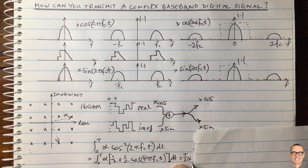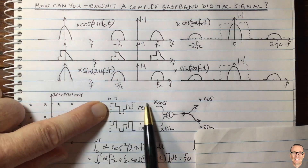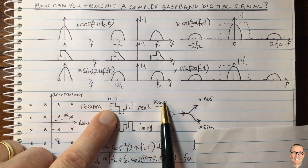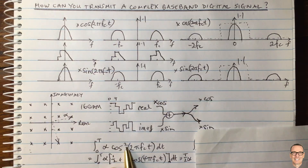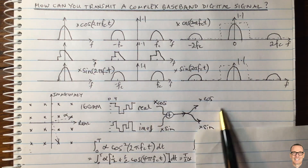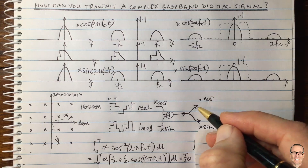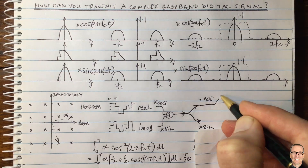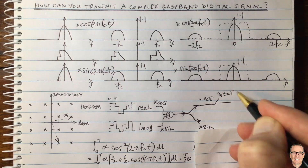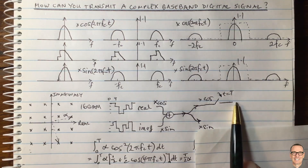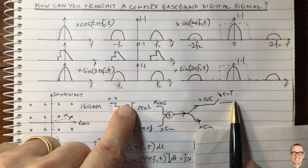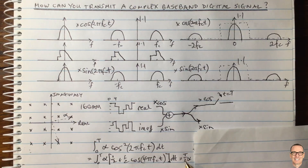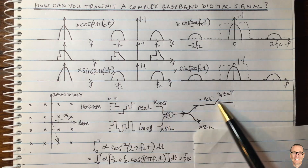The integral over a cosine waveform where there's an integer number of cycles in that range is zero. So all you're left with is the ½ times α, meaning the result equals T/2 times α. Alpha was the digital data. So the real signal going through times cosine, times cosine — cosine squared — and sampled at time T gives us a scaled version of α. This component goes through fine.